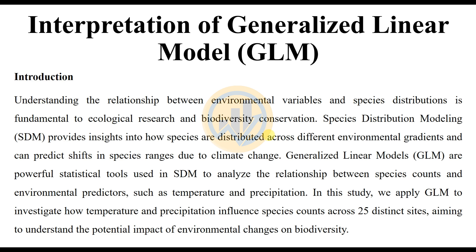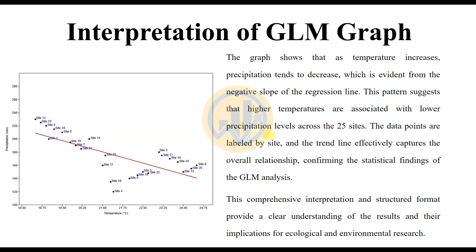Such as temperature and precipitation. In this study, we apply a Generalized Linear Model to investigate how temperature and precipitation influence the species count across 25 distinct sites, aiming to understand the potential impact of environmental changes on biodiversity.